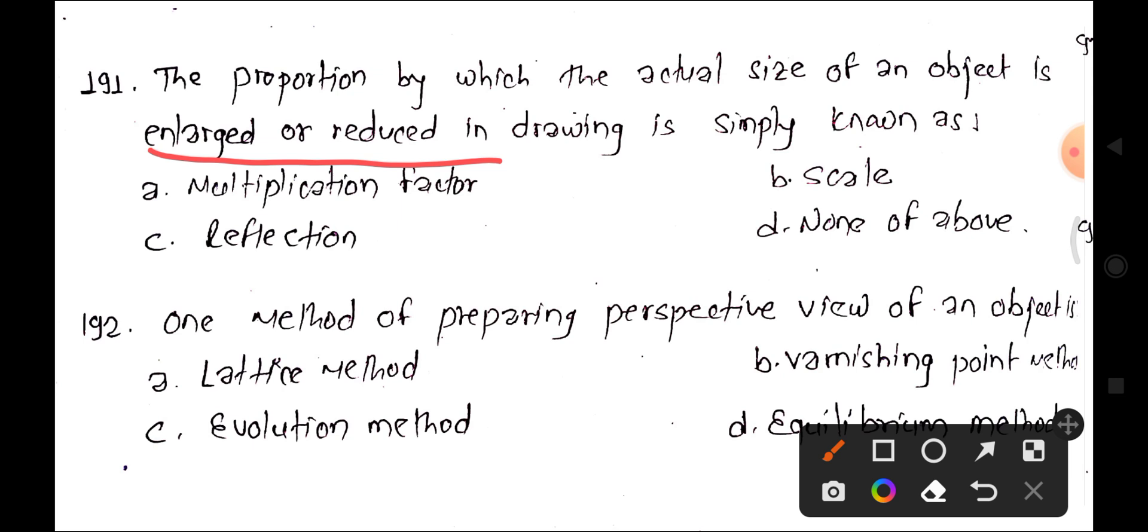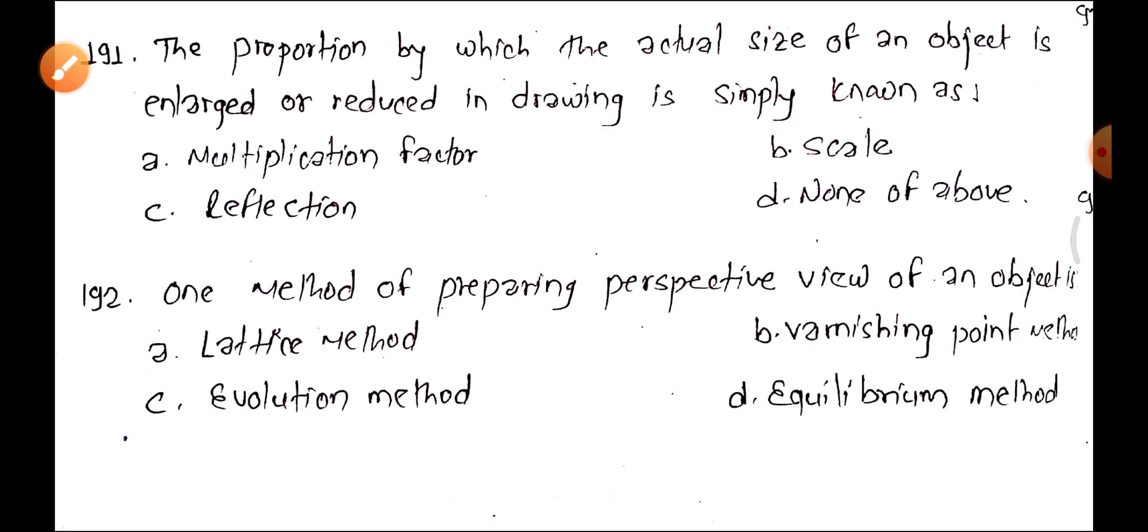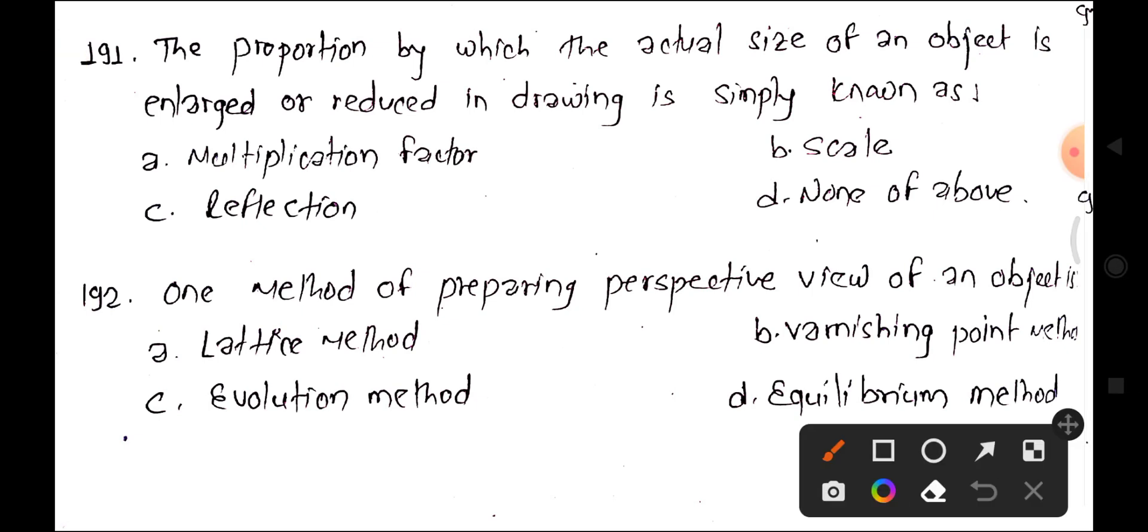Question 192: One method of preparing a perspective view of an object. A is the latest method, B is the vanishing point method, C is the evolution method, D is the equilibrium method. The answer is the vanishing point method.